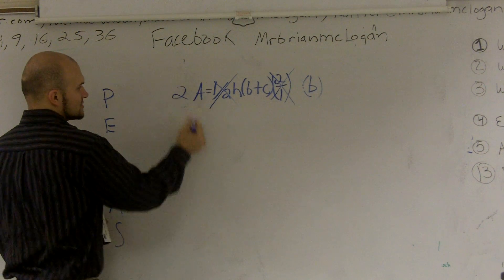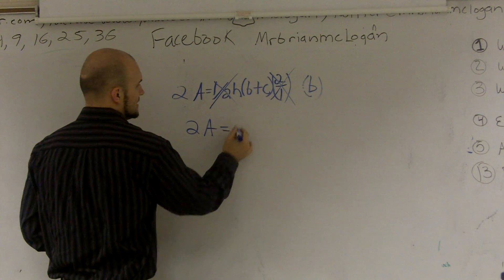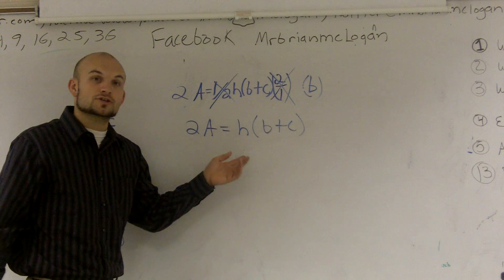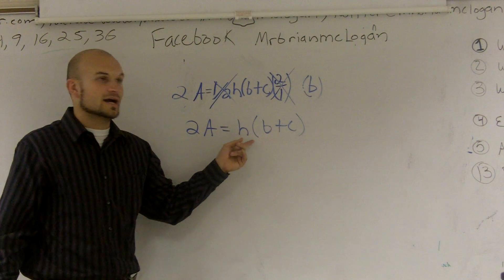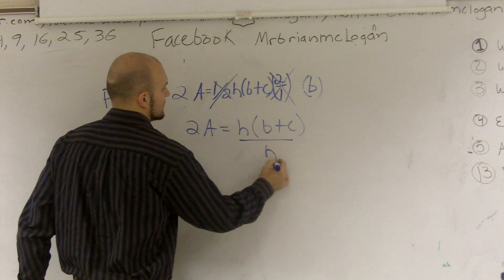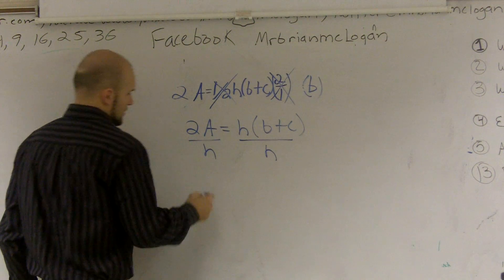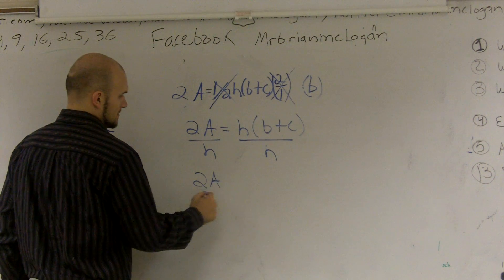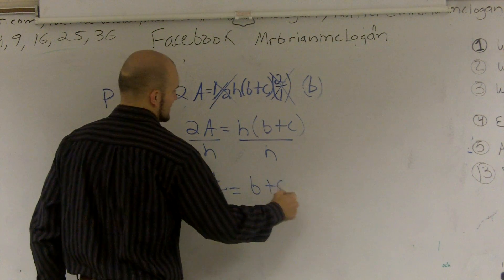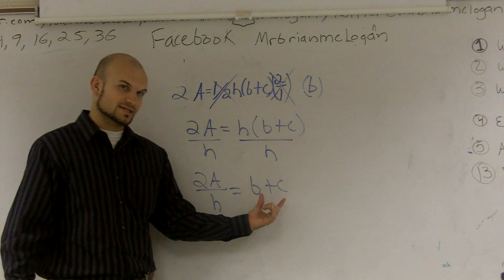Let's multiply this by two. So now I have 2A equals H times B plus C. Now I have to undo multiplication of H. To undo multiplication, I need to divide. So now I have 2A over H equals B plus C. And since it's just B plus C, I can get rid of my parentheses.